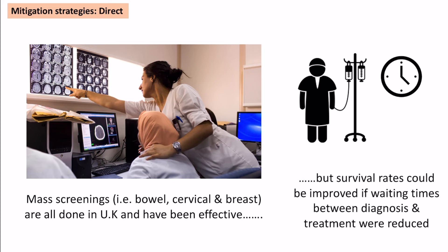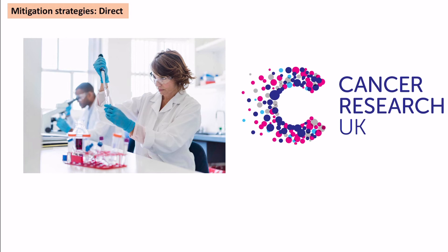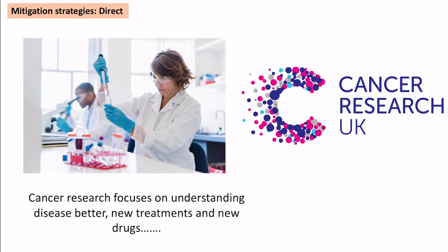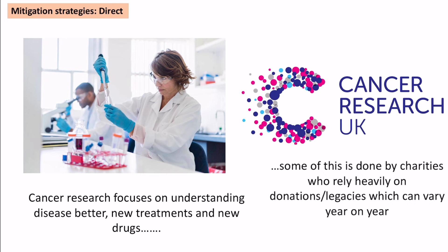In terms of effectiveness, things could be even better if waiting times went down, as there is often a delay between diagnosis and treatment due to NHS pressures — pumping more money in would improve survival rates further. Another direct strategy is cancer research, working on understanding the disease and developing new treatments and drugs. A weakness here is that much is done by charities like Cancer Research UK relying on voluntary donations, which can vary year on year — in a crisis like COVID, charities receive less money and can do less work.